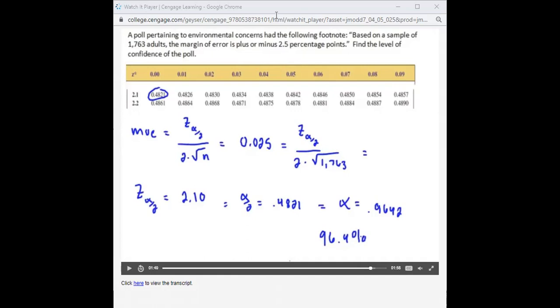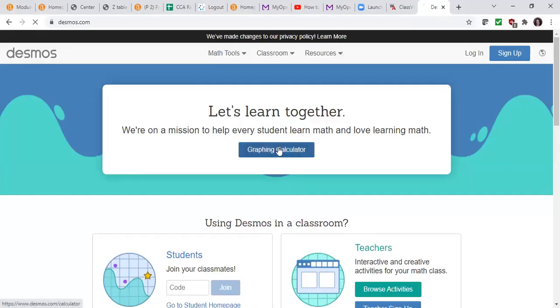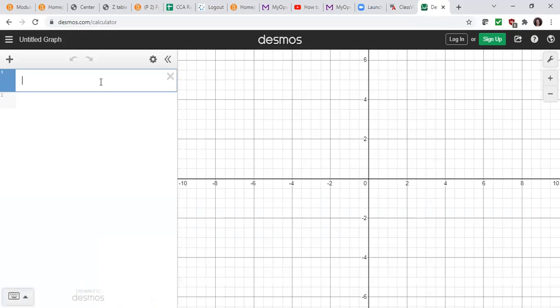And now we're going to do some algebra or plug it into Desmos. I will show you what to do on Desmos. So if you open up Desmos.com, you're going to recall that to solve, we need to multiply both sides by the bottom of the fraction. So we had the way it was written as 0.025 equals, I'm just going to type a z, 2 times the square root of 1,763.